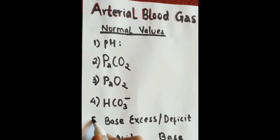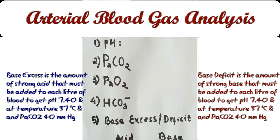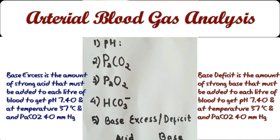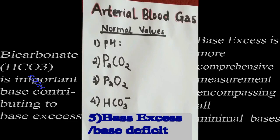Fifth is base excess or deficit. Base excess is the amount of strong acid and base deficit is the amount of strong base that must be added to each liter of fully oxygenated blood to return pH to 7.40 at a temperature of 37 degrees Celsius and a PaCO2 of 40 millimeters of mercury.